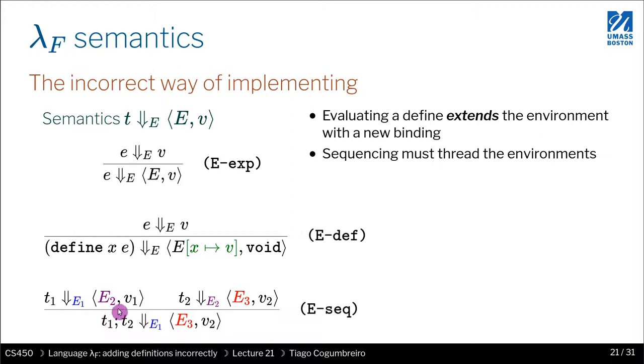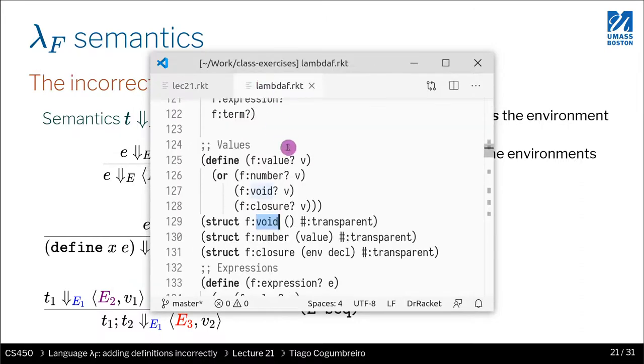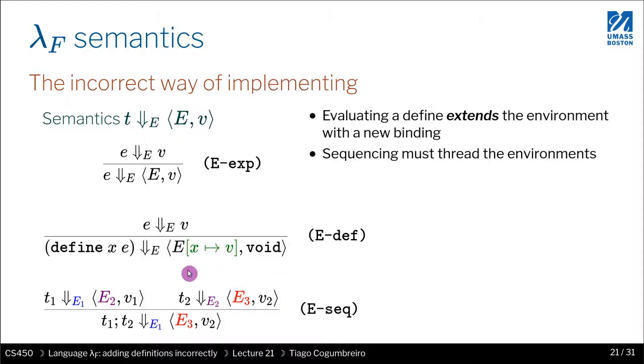And as you recall, sequence is that struct that has f sec, right? It's this one. Okay, so if you find that, you find a sequence, then you are going to have inside of it two terms t, let's call them t1 and t2.